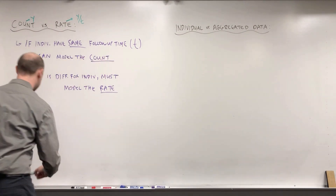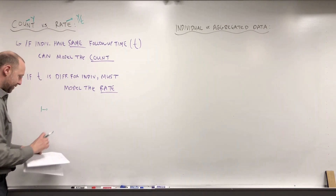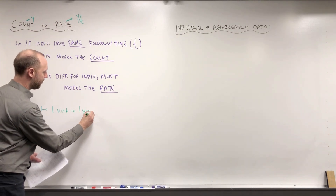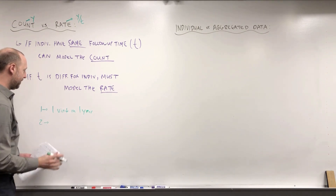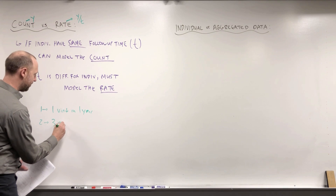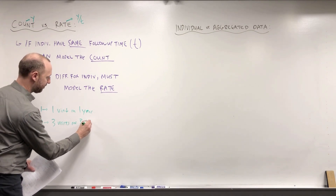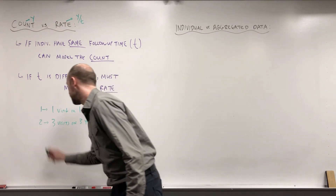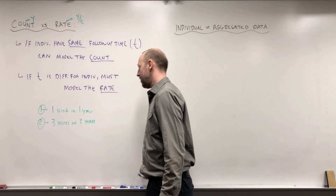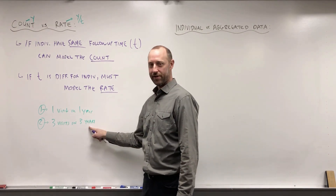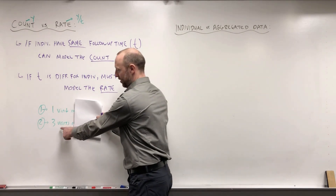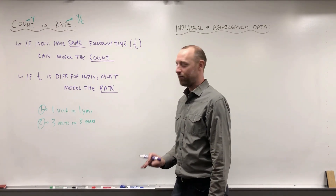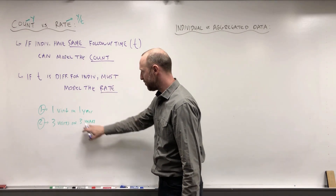Suppose that person number one had one visit in one year, and person number two had three visits in three years. These are the same on a rate basis — one visit in one year, three visits in three years. But if we were to just compare the counts, it's going to look like this person went much more than this person — they went three times, they went only once. So if everyone has been followed for the exact same amount of time, we can model the outcome as a count.